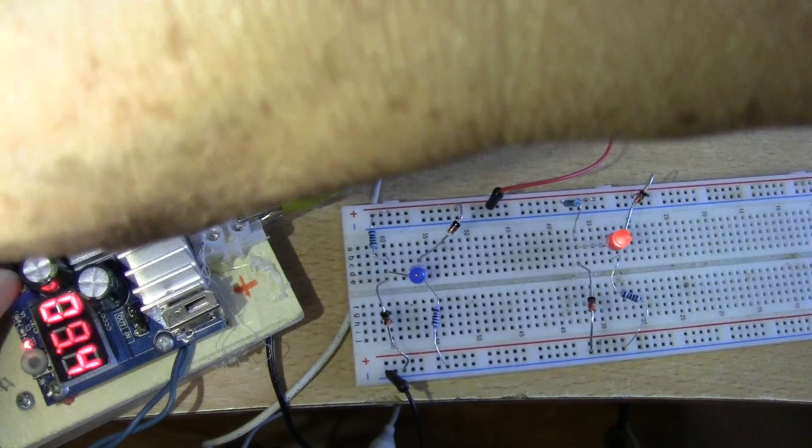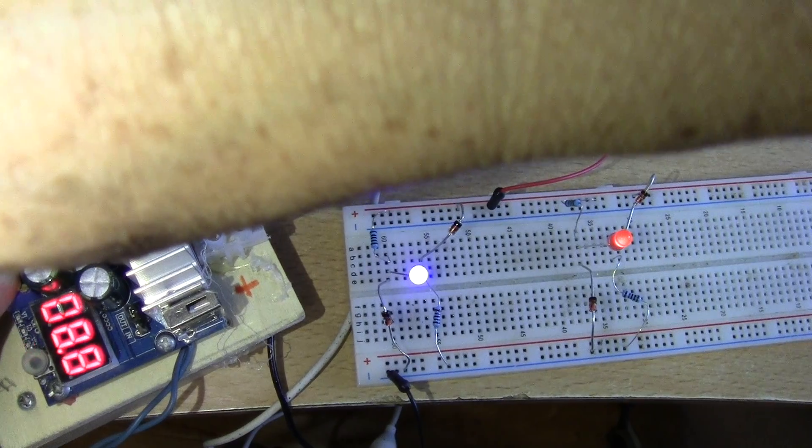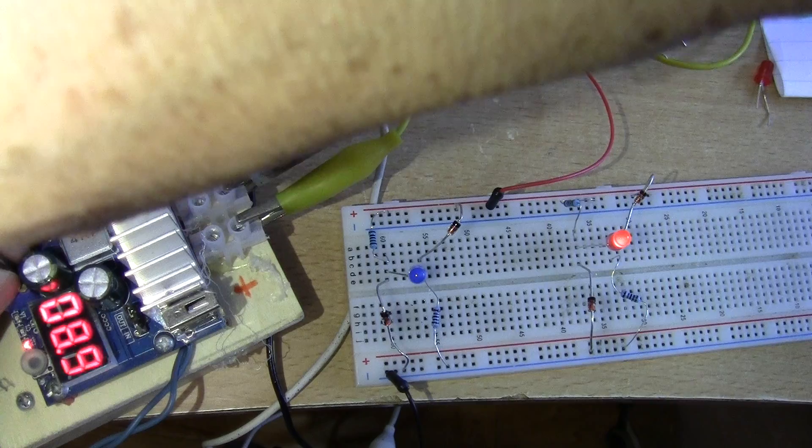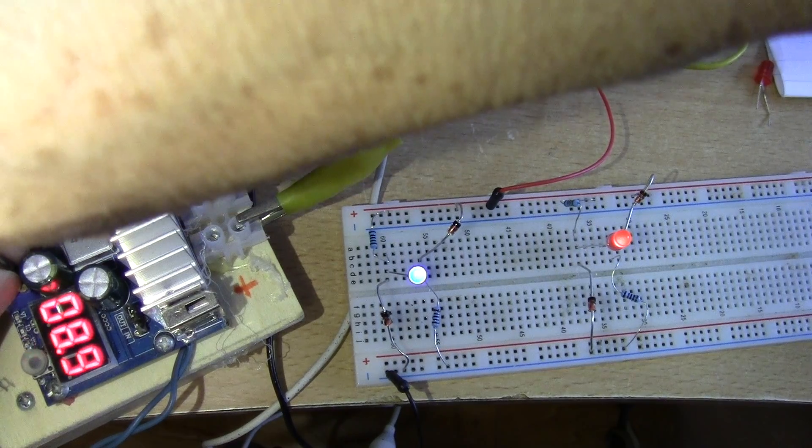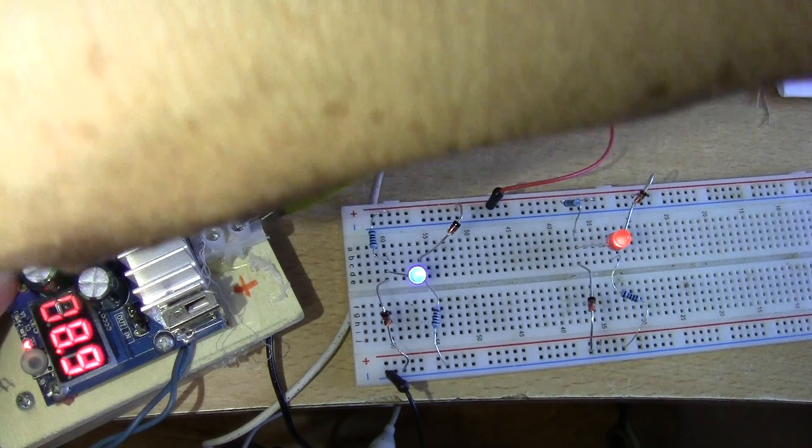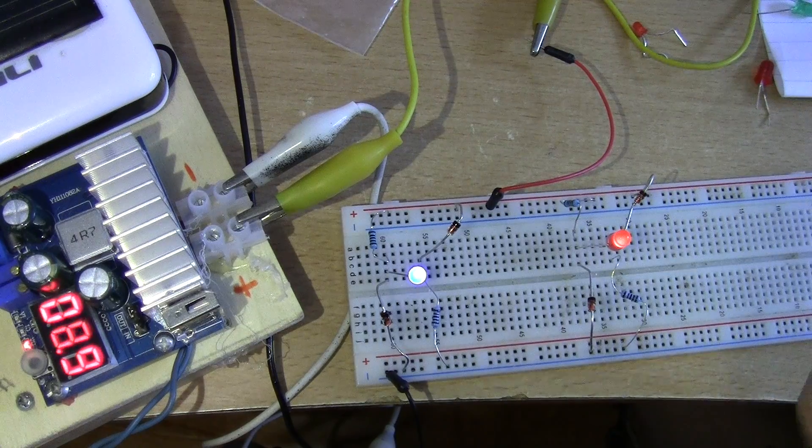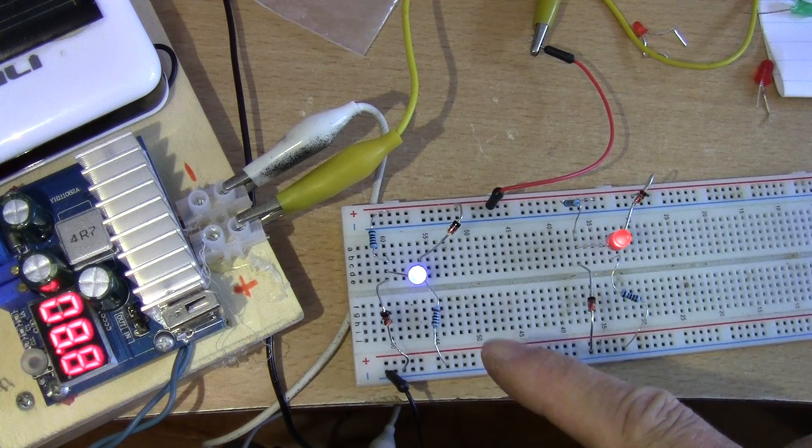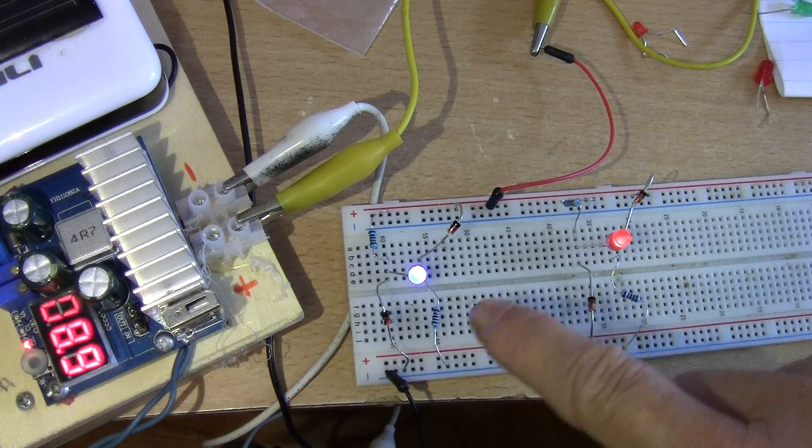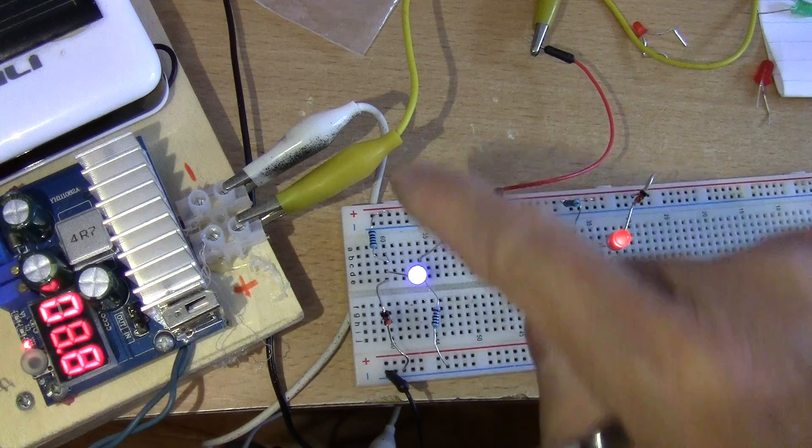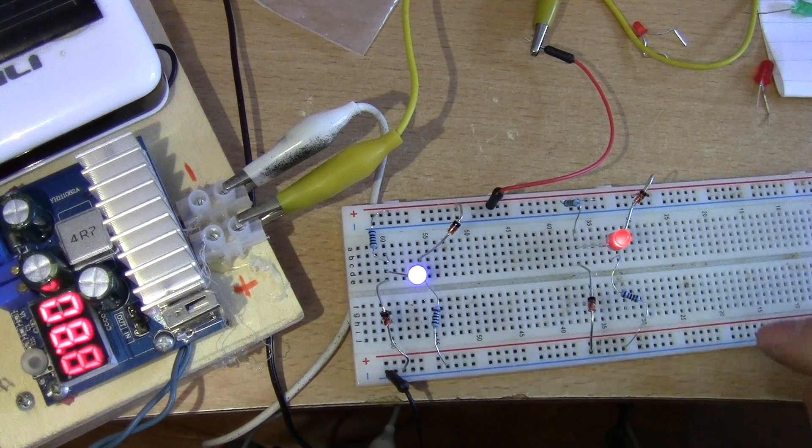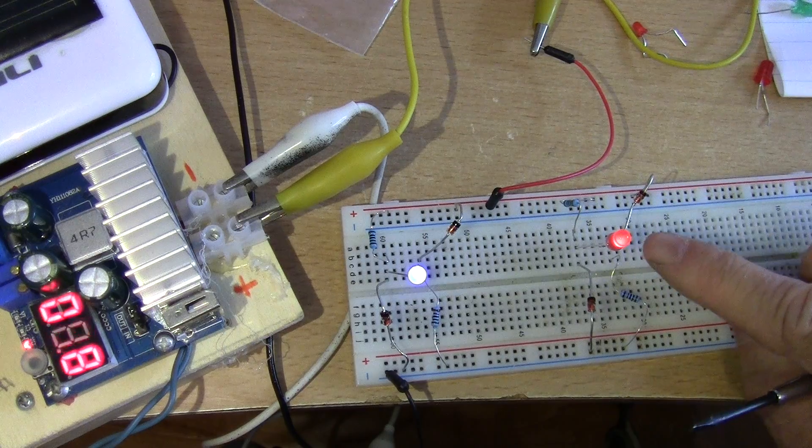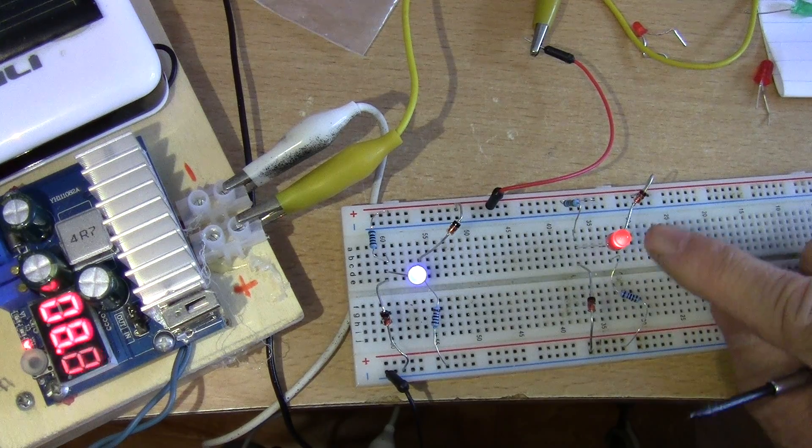And then the blue LED just came on about 9V it came on. So depending on your requirement, if you want the indicator to light at 9V, you can use this kind of LED or change the resistor values. Or if you want it to light up at about 9.6V, you can try the red LED.